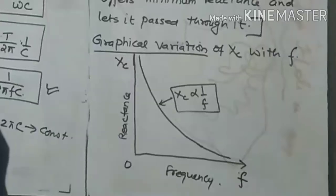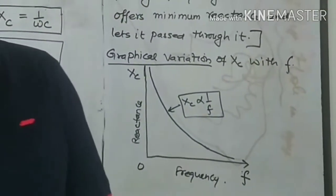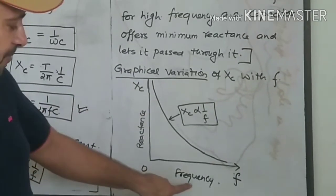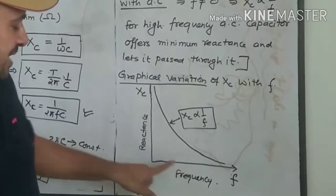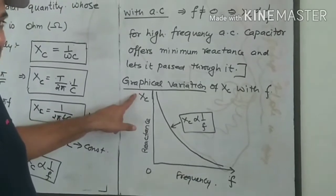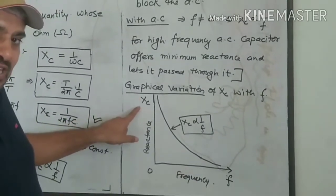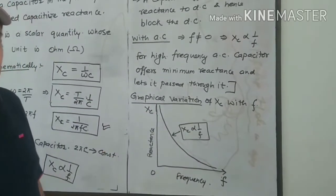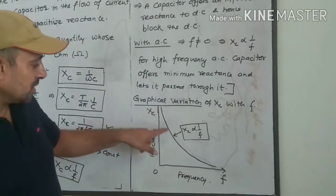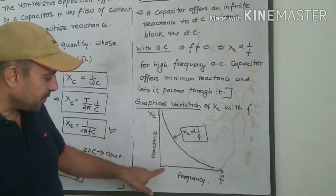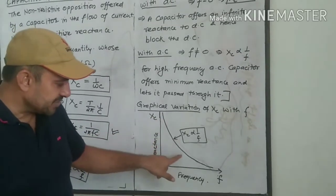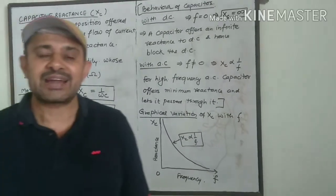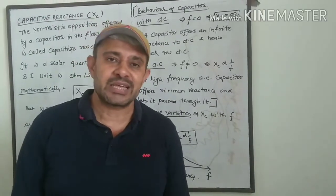The question in your exam will be: justify that a capacitor blocks DC but lets AC pass through it — the answer comes from the above discussion. For the graphical variation of XC with frequency: with frequency on the x-axis and capacitive reactance on the y-axis, the graph is a curved (hyperbolic) line showing high reactance at low frequency. As frequency increases, reactance comes down, and it approaches infinity at zero frequency.